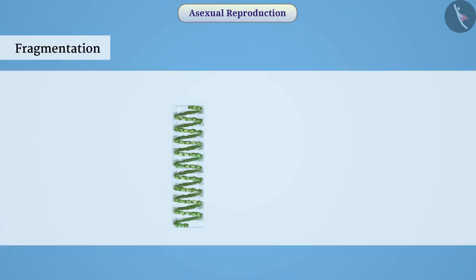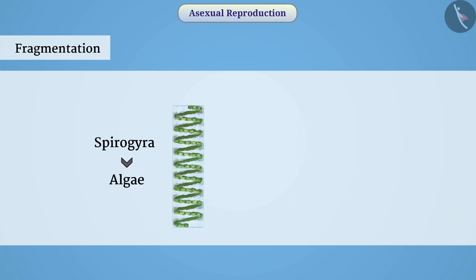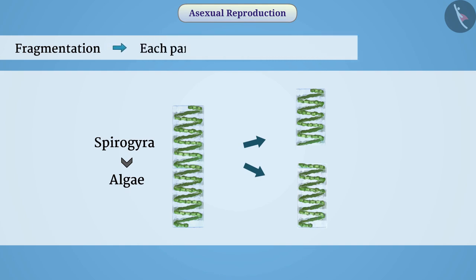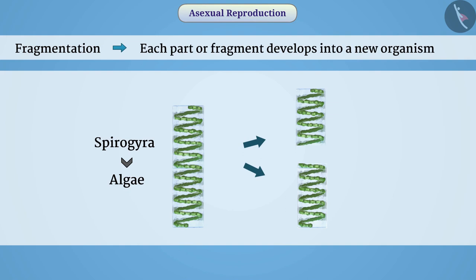Fragmentation. Some multicellular organisms, such as Spirogyra, which is an algae, have a simple body structure. Generally, such organisms are just a group of different cells. When they are fully grown, they break into small pieces, and each part or fragment develops into a new organism. This method of reproduction is called fragmentation.